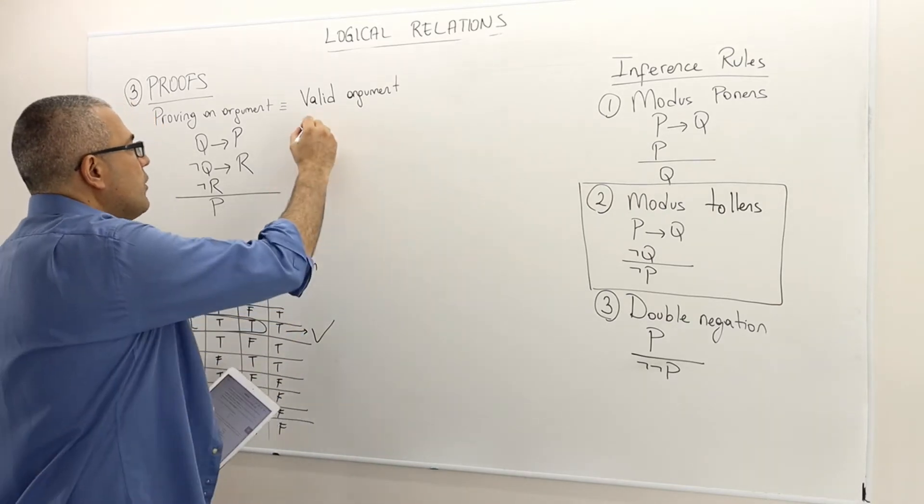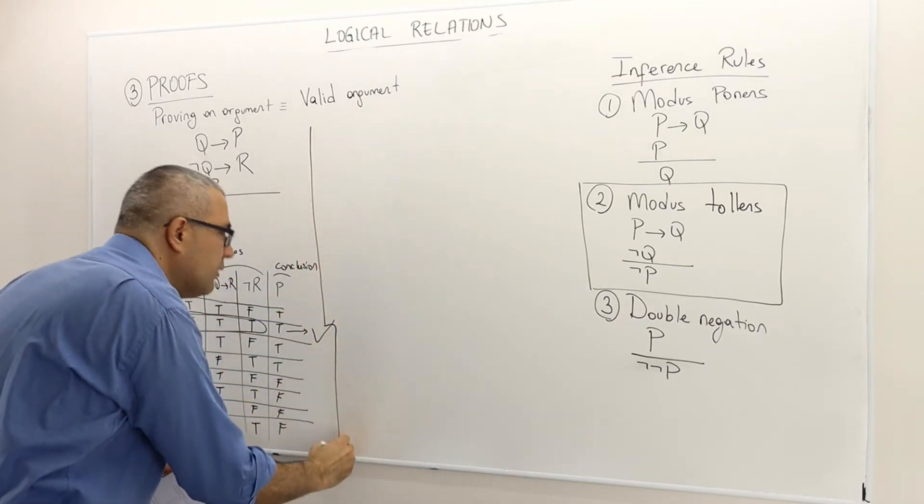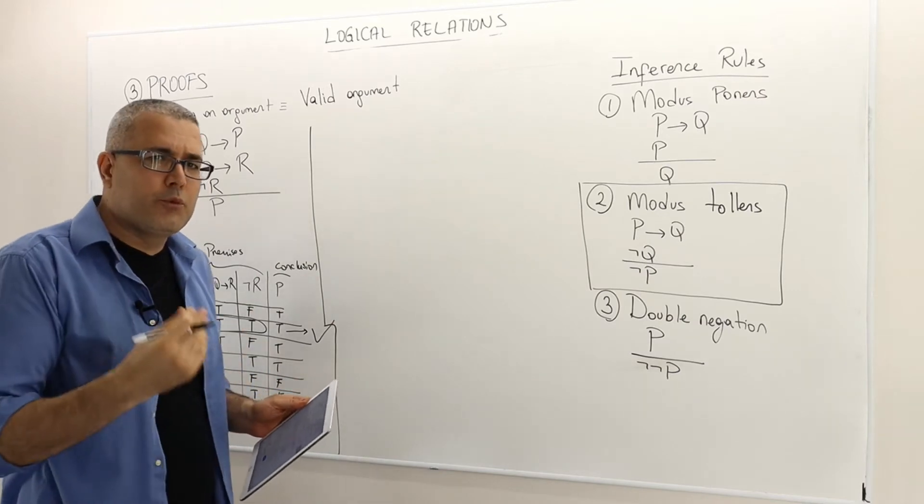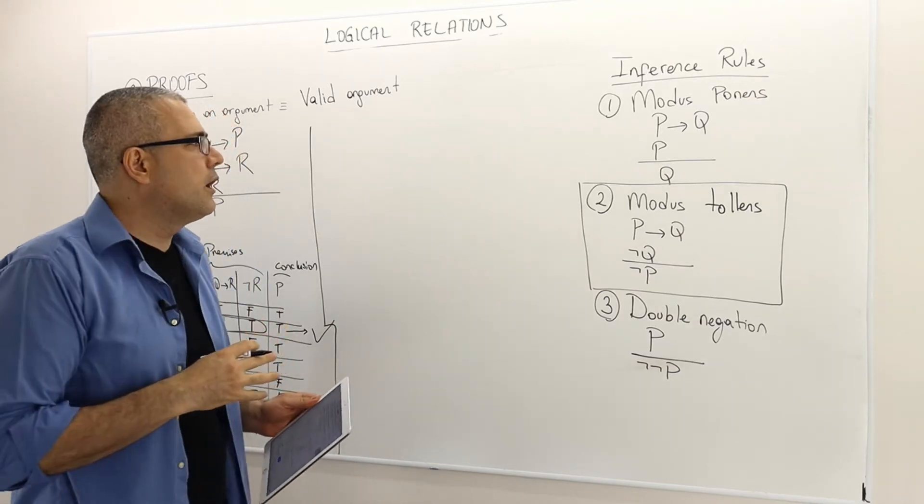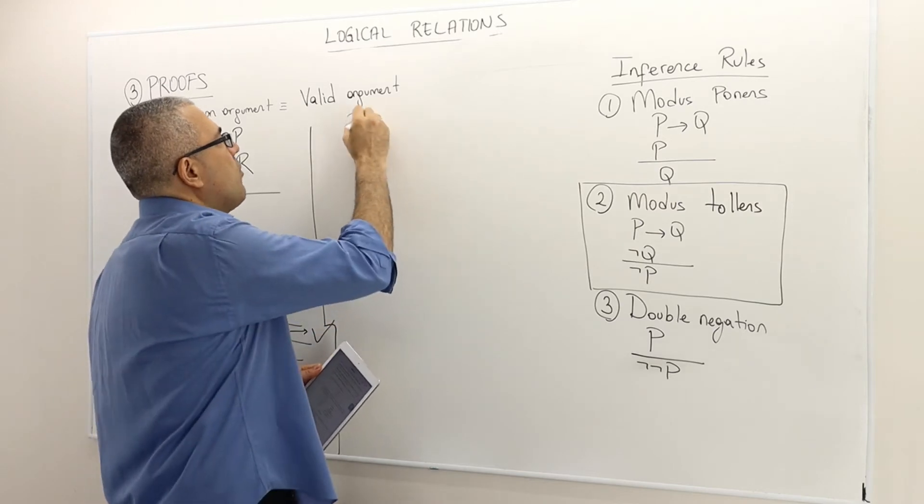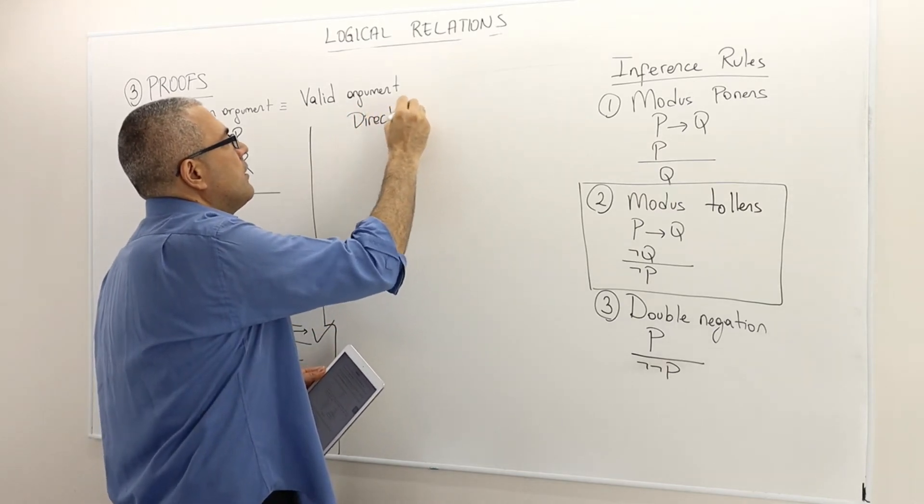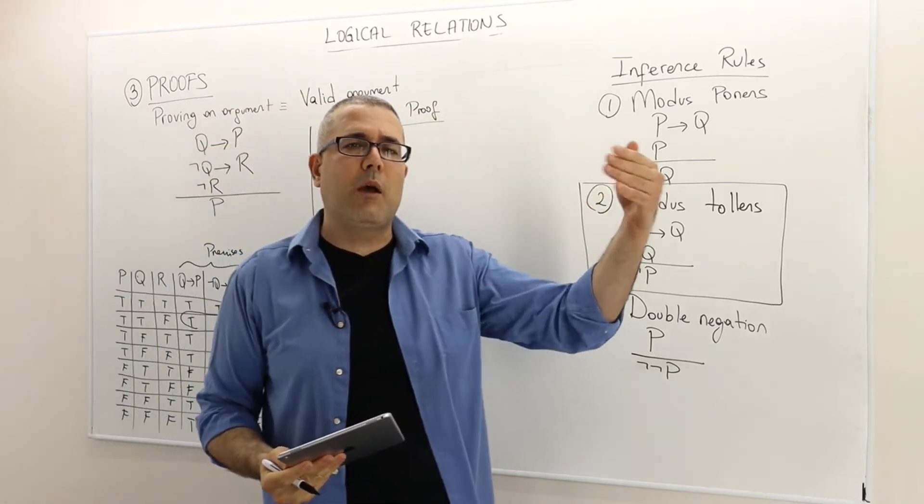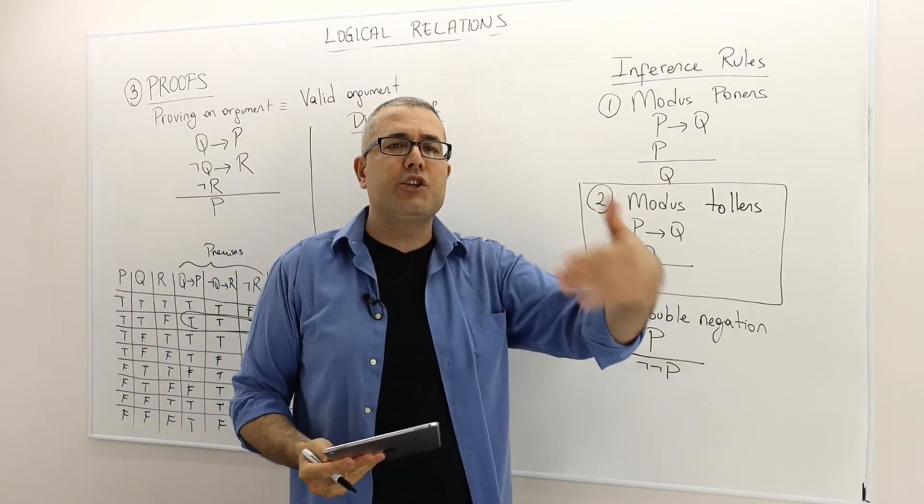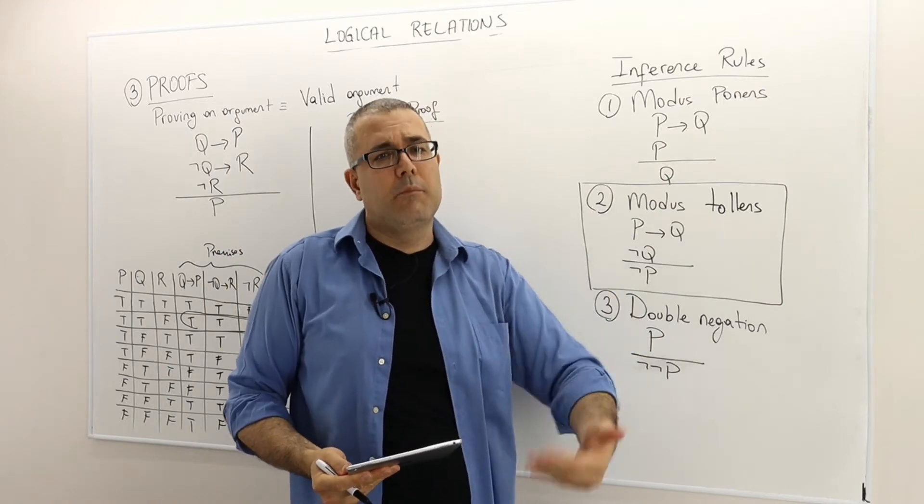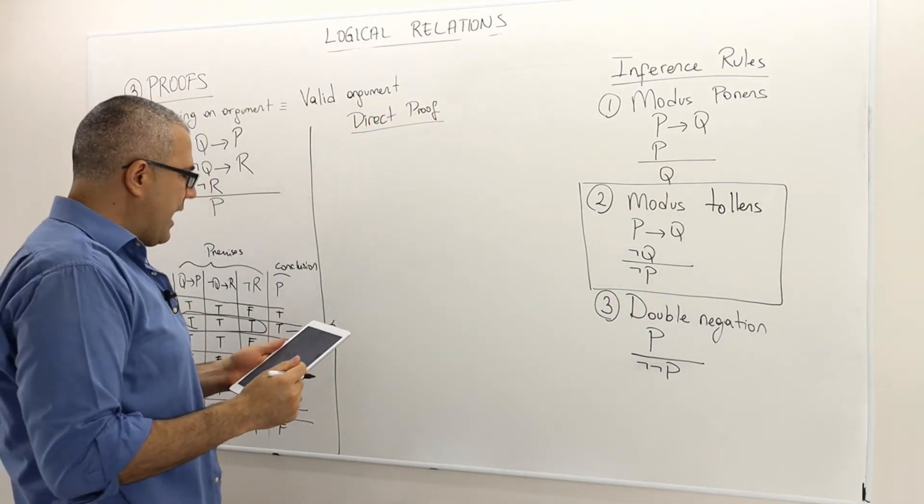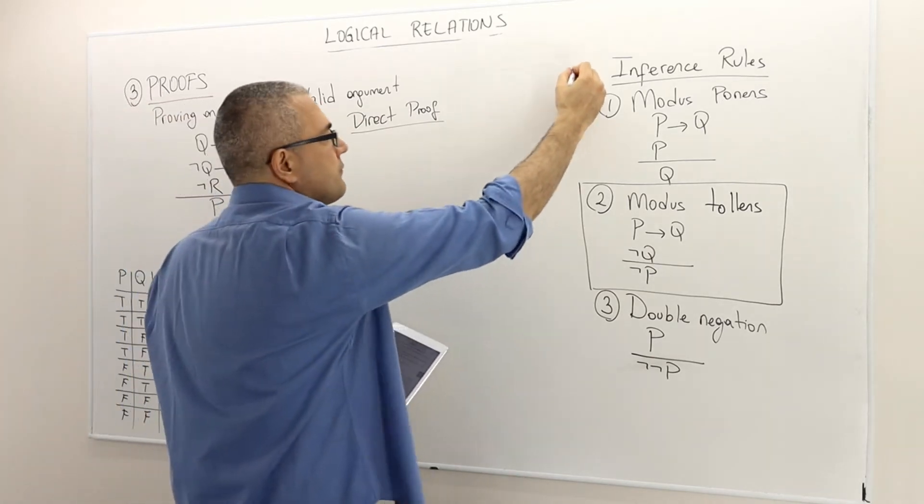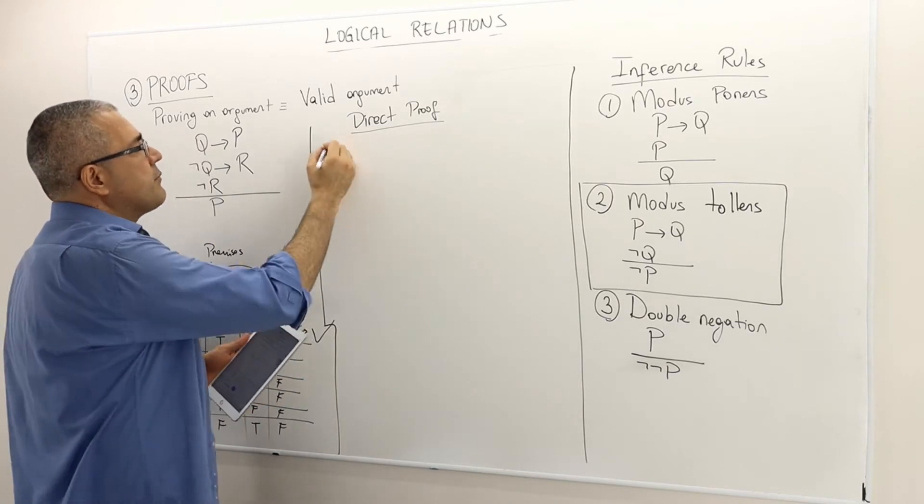So now I'm going to prove it by using those inference rules. And this is the method, the proof method that we call or we use, is what's called direct proof. The idea is the following. You assume that the premises are true, and then show that the conclusion must be true as well.